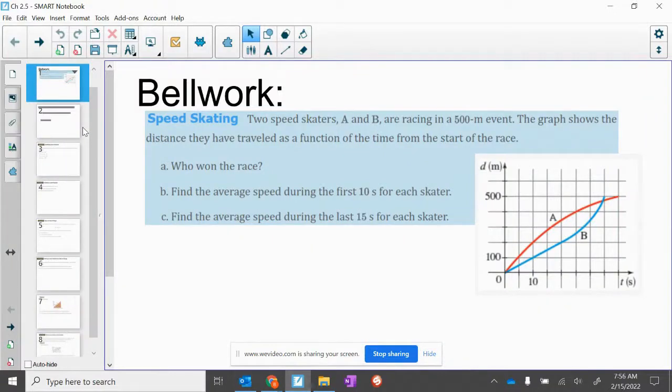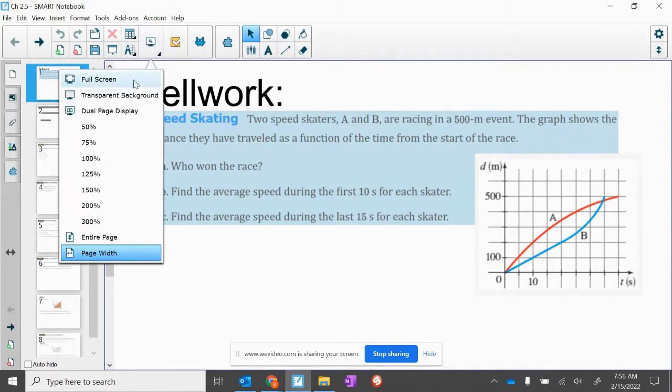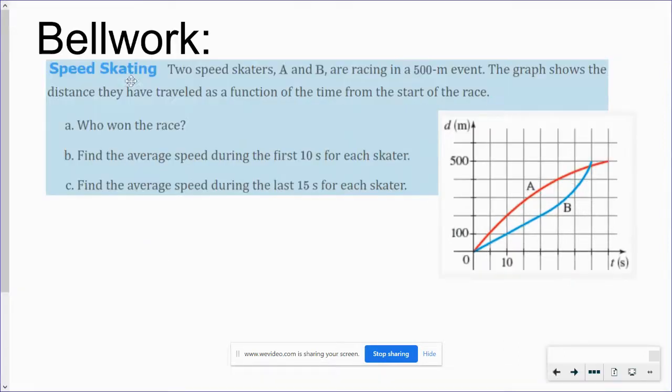Alright, we're going to get into 2.5 today. So here is the bell work. This bell work is over the average rate of change. Go ahead and pause and see if you can answer these questions.